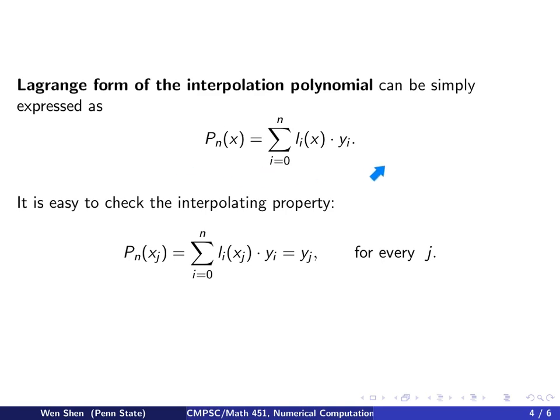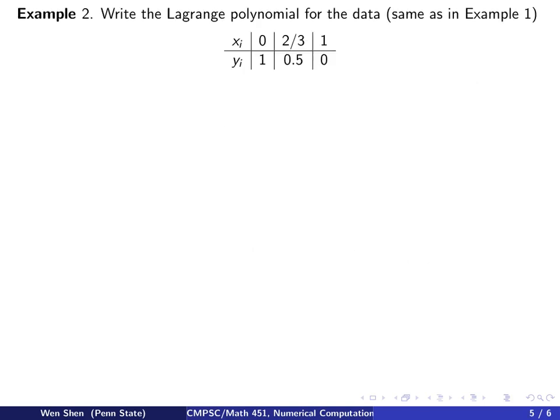This form of interpolation polynomial is called the Lagrange form. Let's consider an example. This is the same data set as we worked on in example 1, where we constructed the interpolation polynomial using the Vandermonde matrix. And now in this example, we want to write out the Lagrange form of the polynomial.